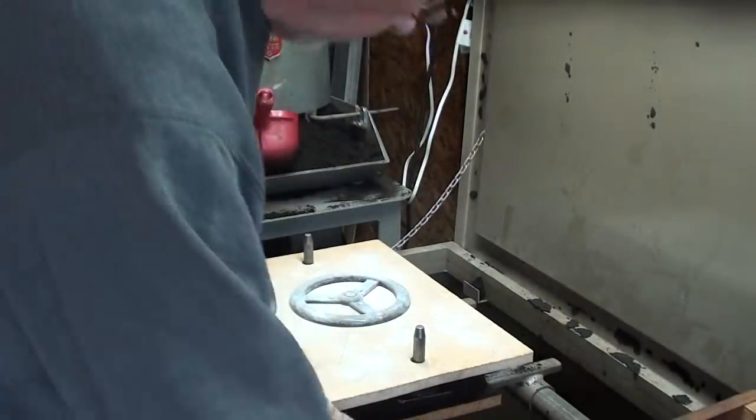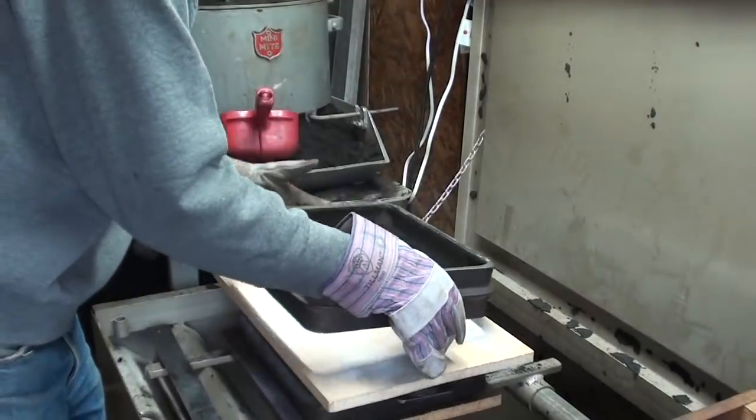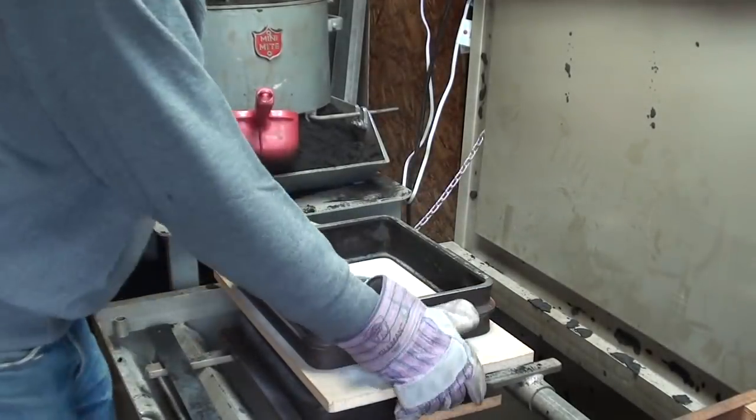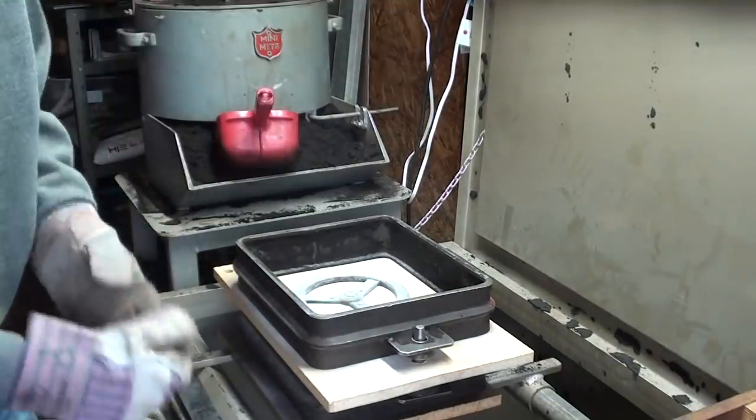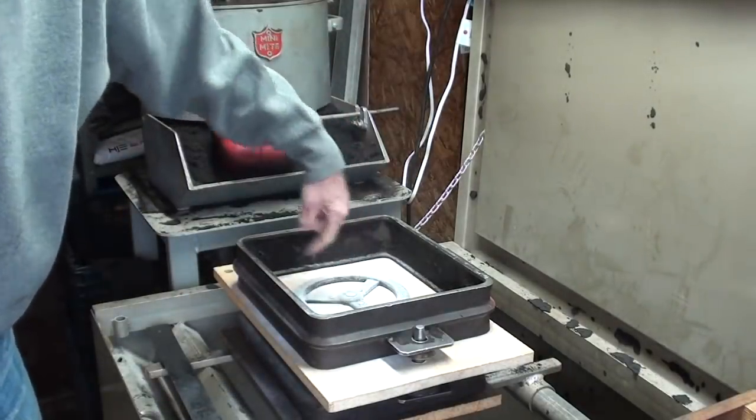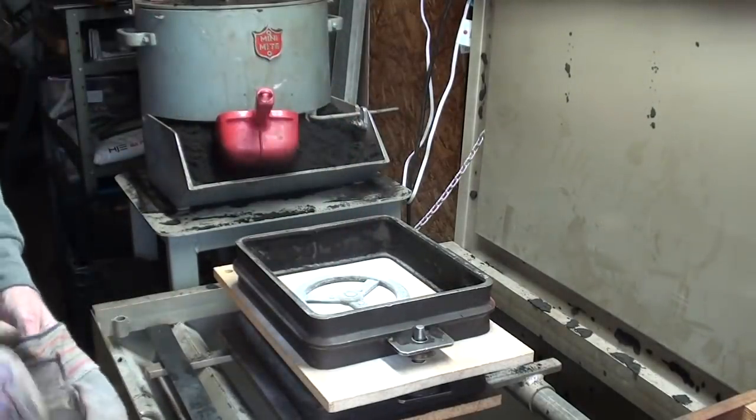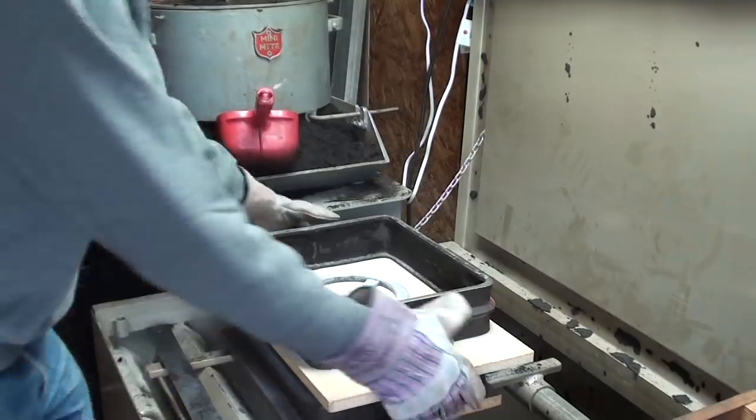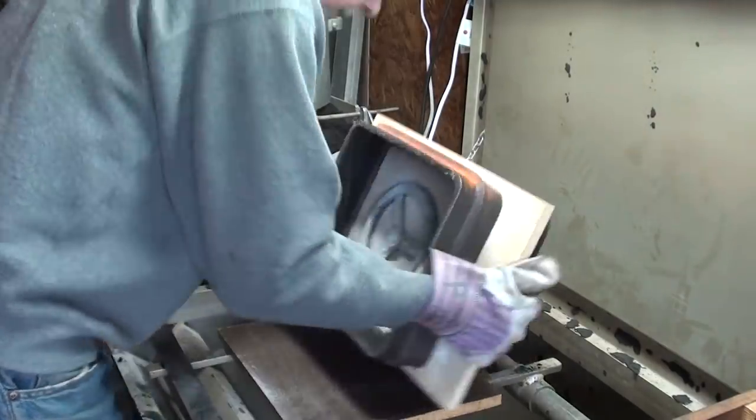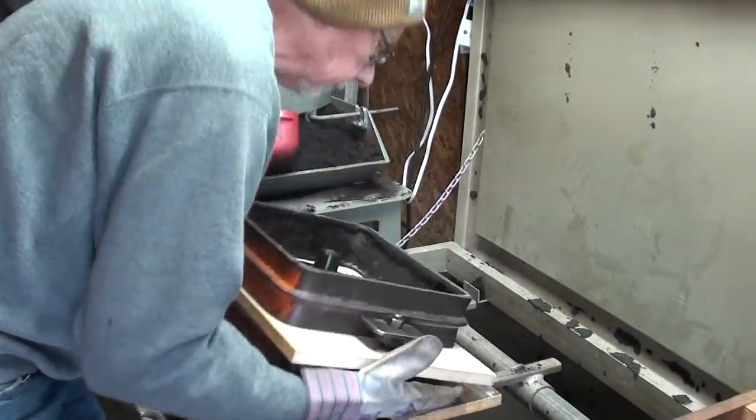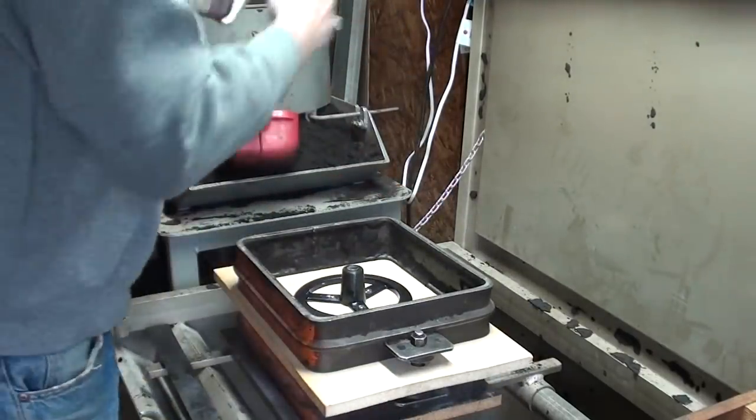Assembling the flask, I'll start with the other side, because I think I'm going to run a big sprue right in the center as a riser. See how that works. So, I'll start on this side.